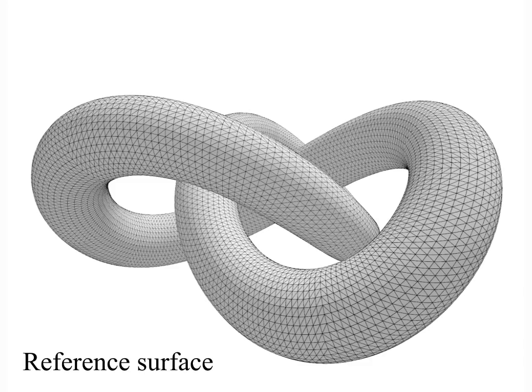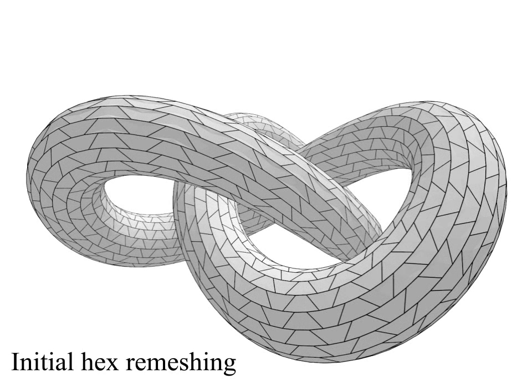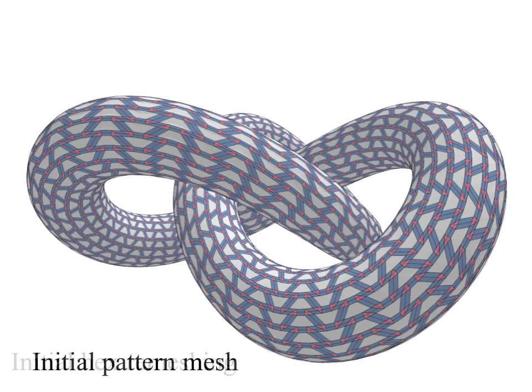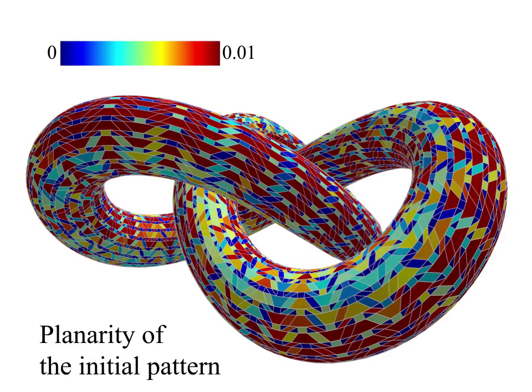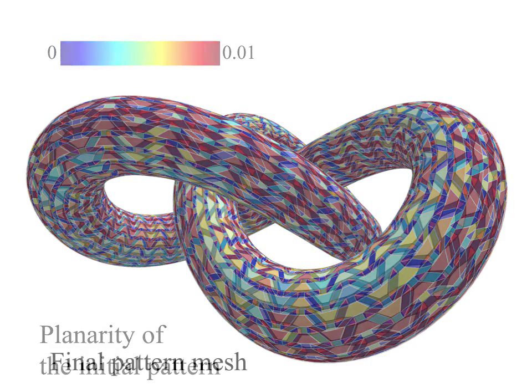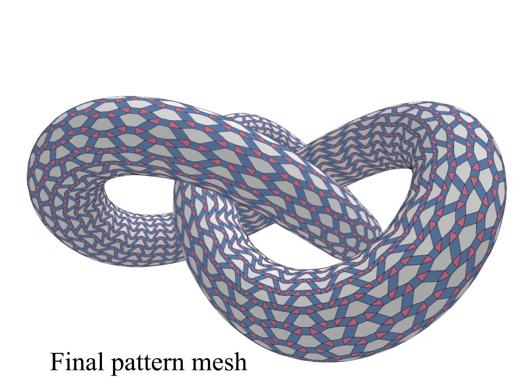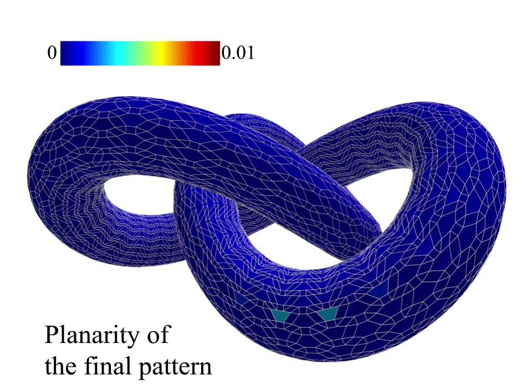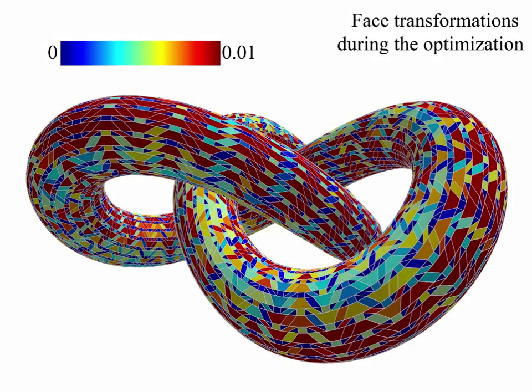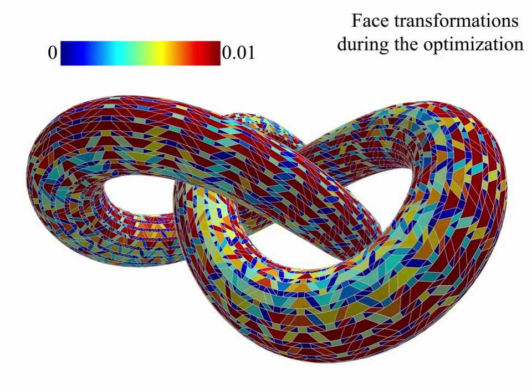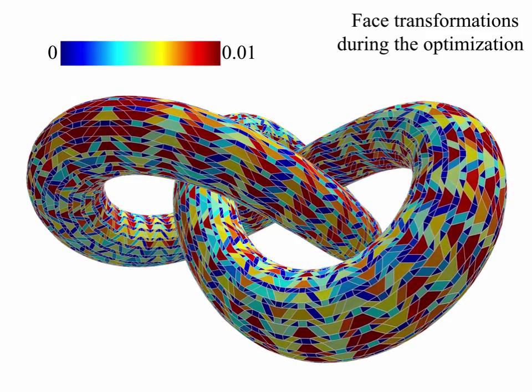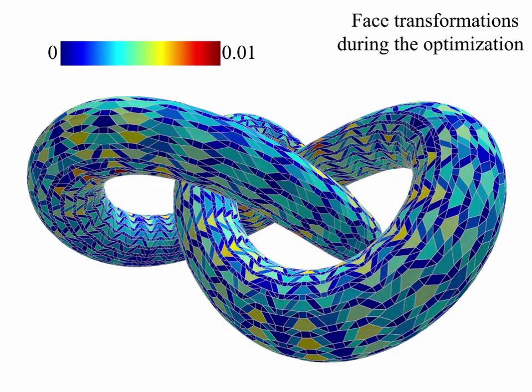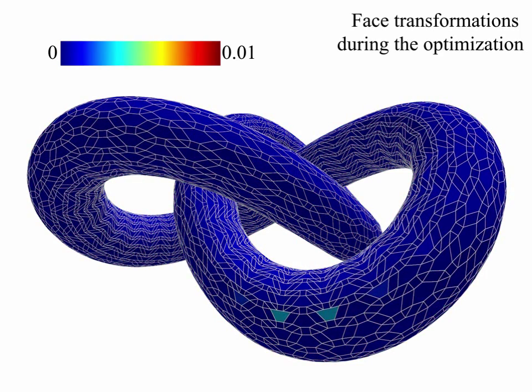This is a reference surface mesh for the knot examples. Here we show the initial hex remeshing. This is the initial pattern mesh after subdivision. Note that the faces are not planar as shown in this visualization. This is the final pattern mesh. The mesh has been successfully planarized. We visualize the face deformations during the optimization process.